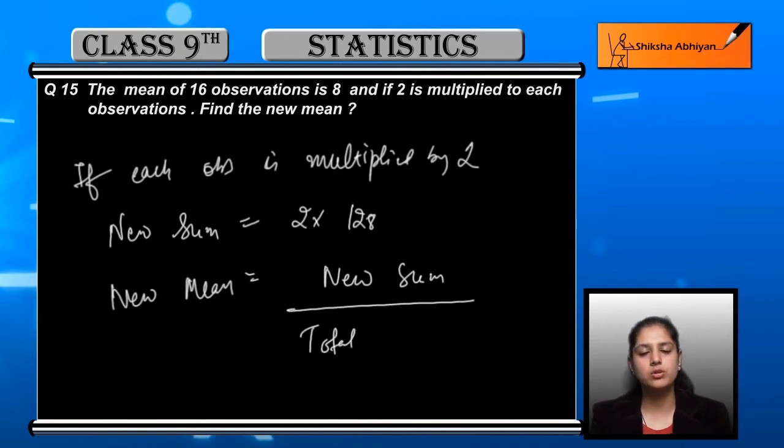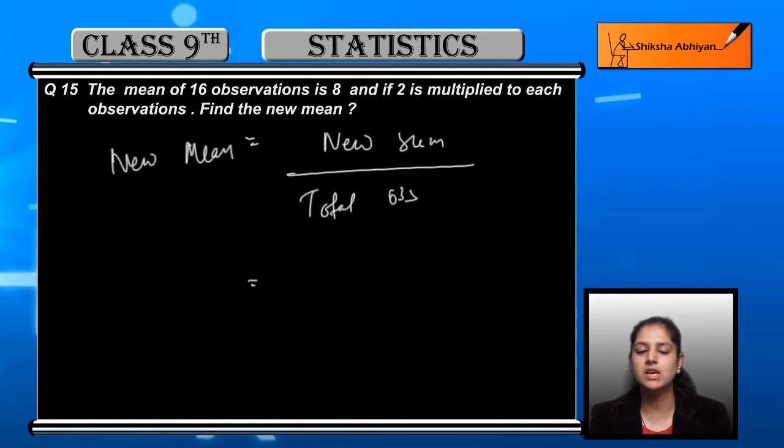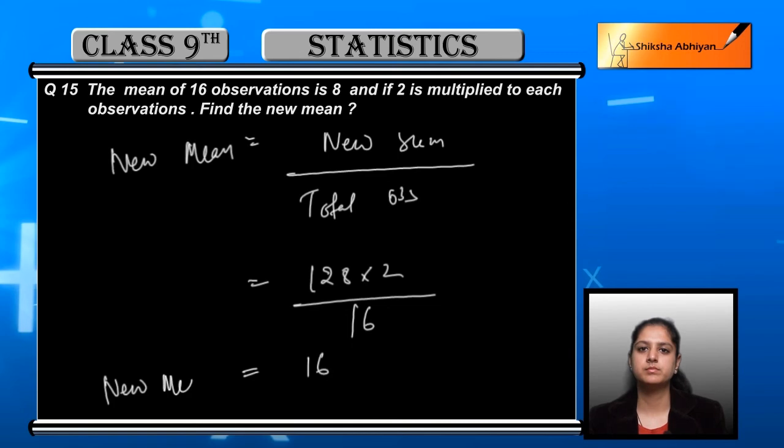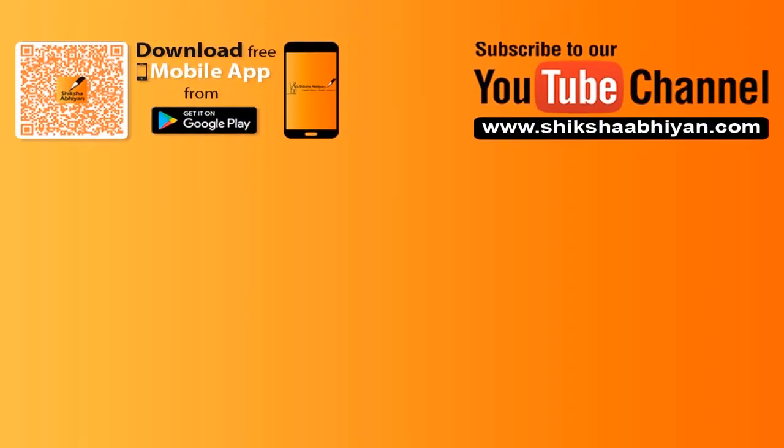The total observations remain 16 - the number of observations doesn't change. After solving, we get 16 as the new mean.